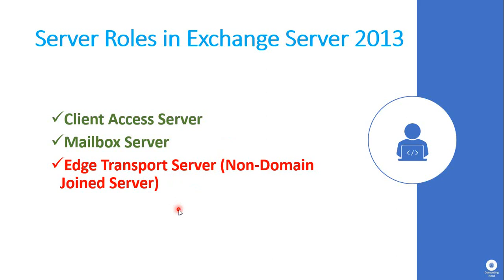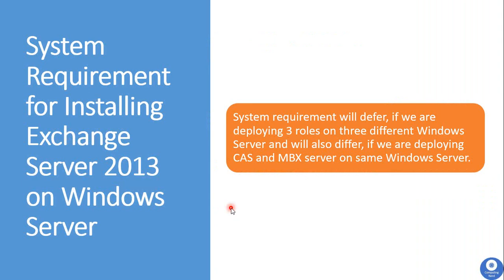The Edge Transport Server role is designed to sit in the demilitarized zone or the perimeter network in your organization. The system requirement for installing Exchange Server 2013 will differ depending on whether you are installing these three server roles on three different Windows servers or on a single Windows server. Here, single Windows server means installing the Mailbox and Client Access Server roles together, while the Edge Transport Server will always be on a different non-domain-joined Windows server.